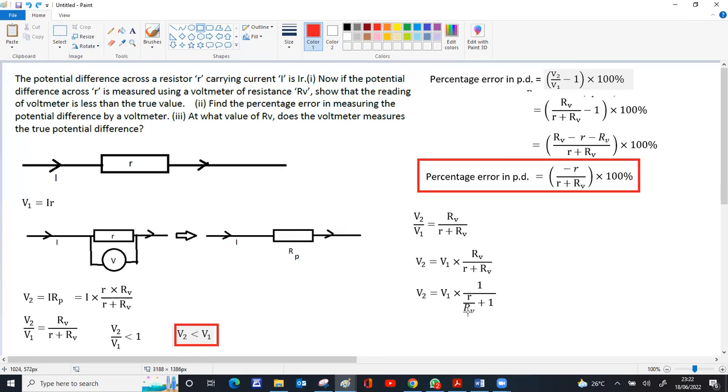This means if the resistance of the voltmeter is infinity, 1 by infinity equals 0. So 0 times r equals 0 plus 1 equals 1. Therefore, if the voltmeter has infinite resistance, in the ideal case v2 and v1 will be the same.